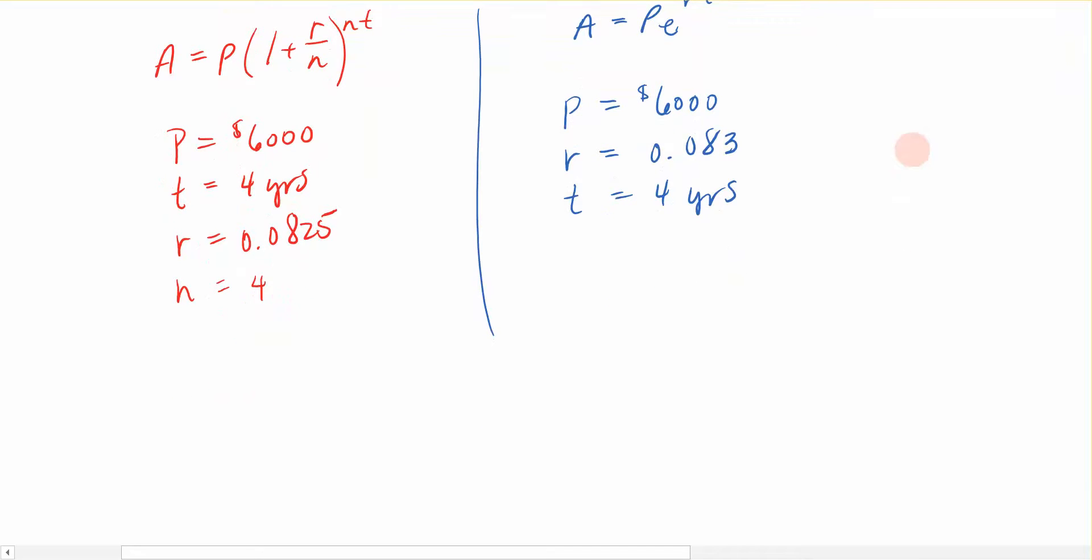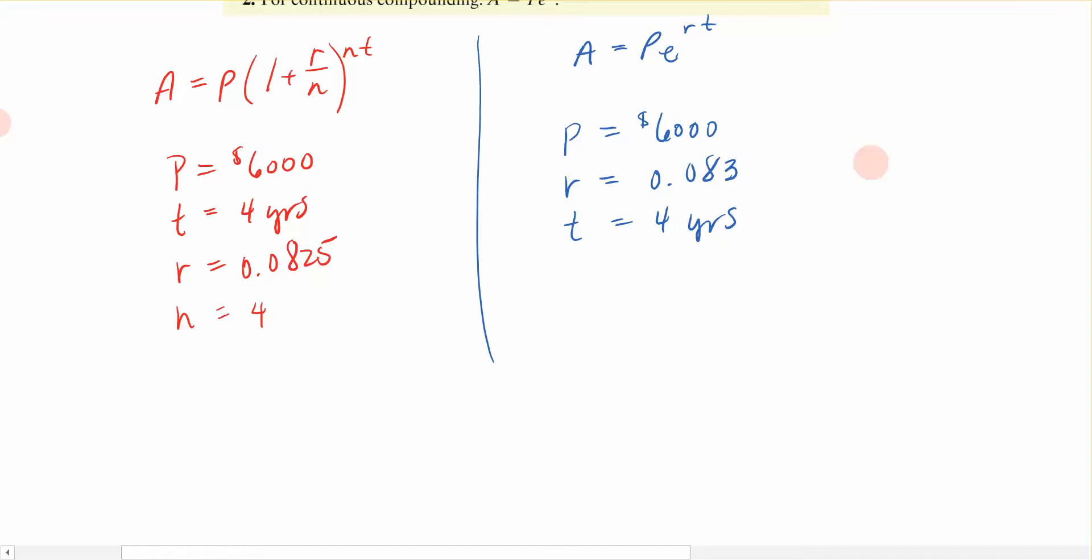Those are the two pieces of information because I'm going to basically be solving this twice. I'm going to write it down even though this is a calculator problem. I'm going to write it down so I can make sure that I get it into my calculator correctly. So I know that I'm looking for the final dollar amount when I have $6,000 invested at one plus R is .0825 divided by N, raised to the four times four for the quarterly compounding over four years.